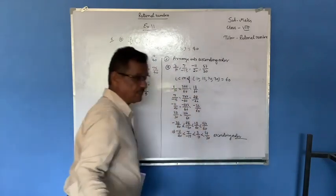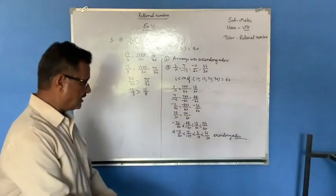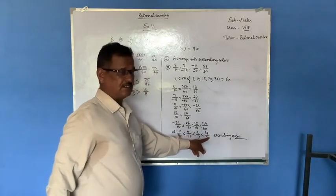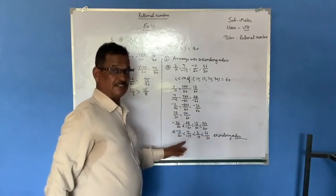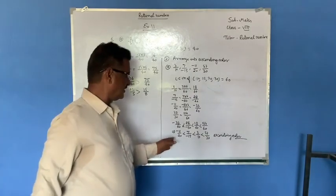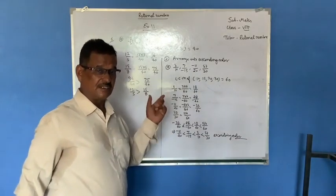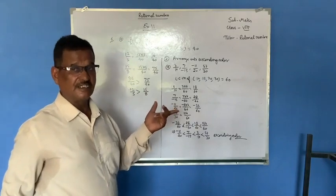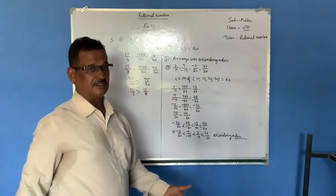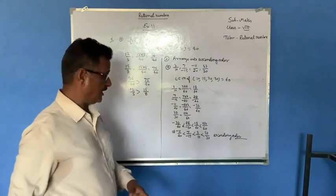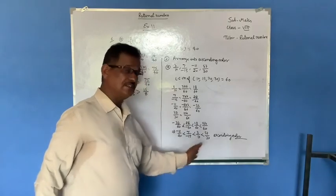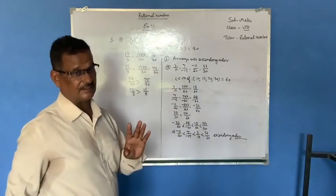If any other question asks to write in descending order, then first you write the largest and then the smallest — that means you write in decreasing order. Here we wrote in increasing order; for descending order you write in decreasing order.